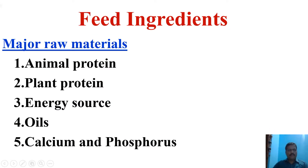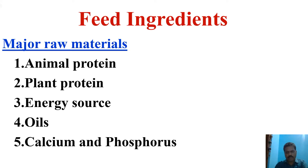In feed ingredients there are majorly five patterns described for use in the feed. There are two main categories: one is major raw materials and second is minor raw materials. In this one we are going to discuss about what are the major raw material sources used in feed ingredients.